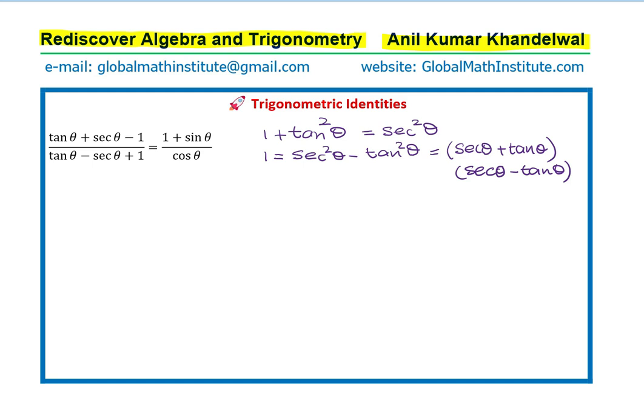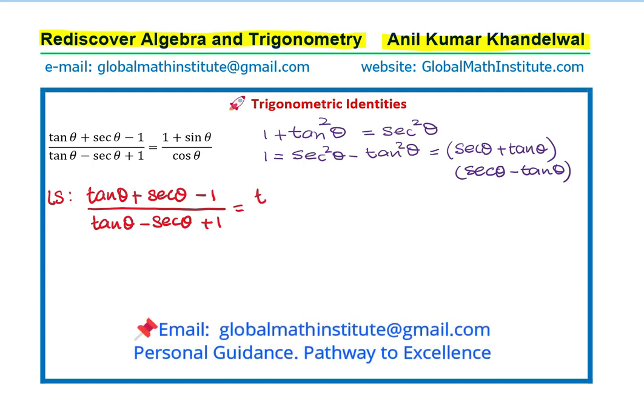Let's begin with the left-hand side, which is given to us as tan θ + sec θ - 1 over tan θ - sec θ + 1. Normally we could do this by splitting 1 in numerator or denominator. I prefer numerator. So we will write this as tan θ + sec θ minus, instead of 1, I'm going to write sec²θ - tan²θ.